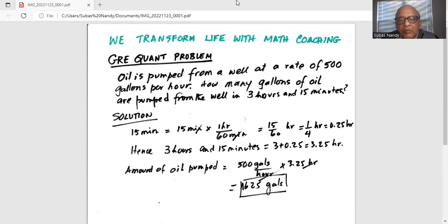So amount of oil pumped is 500 gallons per hour multiplied by 3.25 hour. Hour and hour cancels. So we are left with amount of oil pumped equal to 1625 gallons.